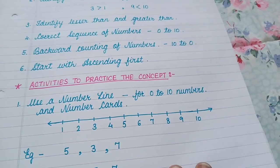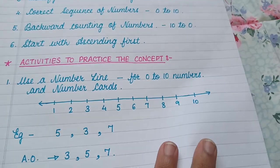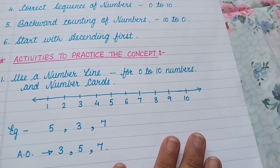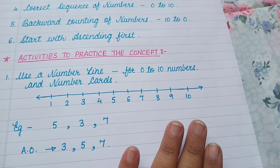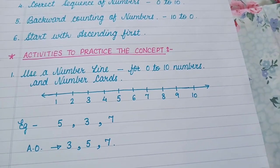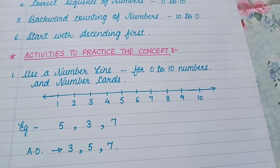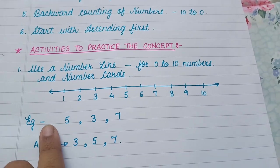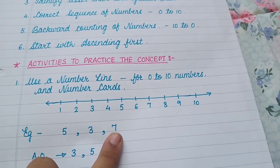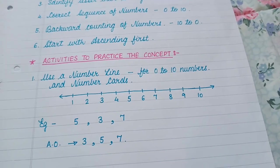Now what are the different activities that you can do to practice the concept? First and foremost, I would suggest you to draw a number line and use that with basic numbers from 0 to 10 or 1 to 10 or you can also use number cards. If you have flash cards, you can use those. Now I have given the child this problem, 5, 3 and 7 and ask the child to write these three numbers in their correct ascending order.